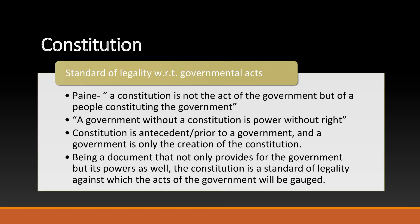The Constitution serves as a standard of legality with respect to governmental acts. As Thomas Paine argued, a Constitution is not the act of the government but of a people constituting the government. A government without a constitution is power without right. The Constitution is antecedent — prior to a government — and a government is only the creation of the constitution, a document that not only provides for the government but its powers as well. The constitution is therefore a standard of legality against which the acts of the government will be gauged.